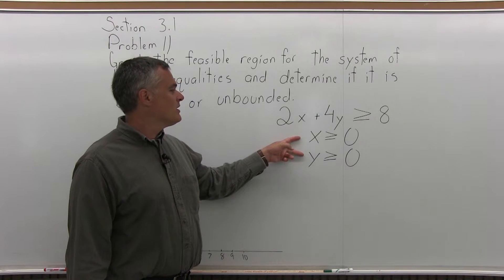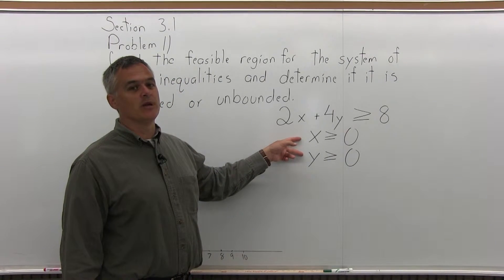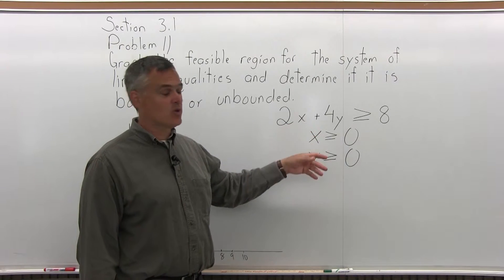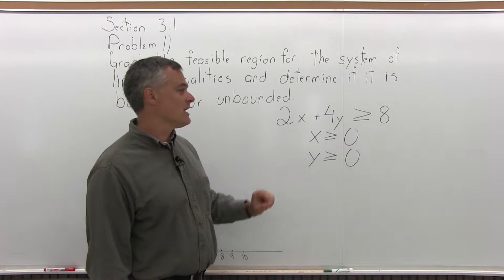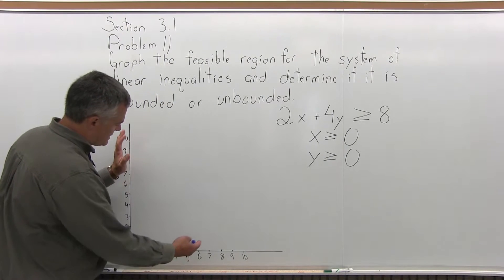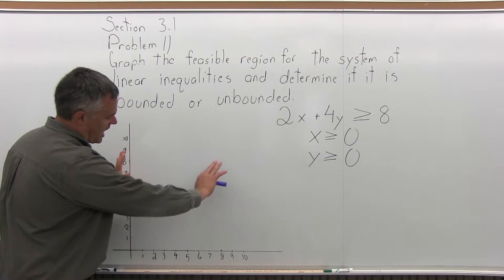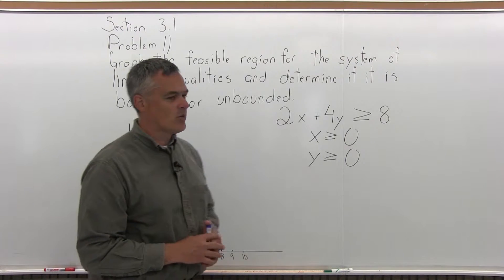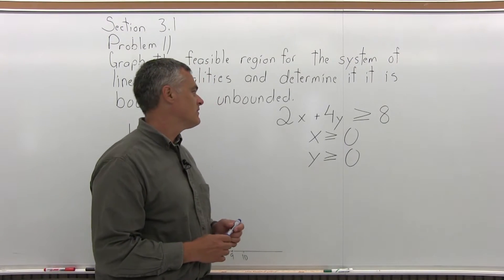These last two with greater than or equal to 0 are very common when you have a system of linear inequalities. They're almost always in a system. What they do, as you'll see, they just trap you into this upper right quadrant of your Cartesian coordinate system.